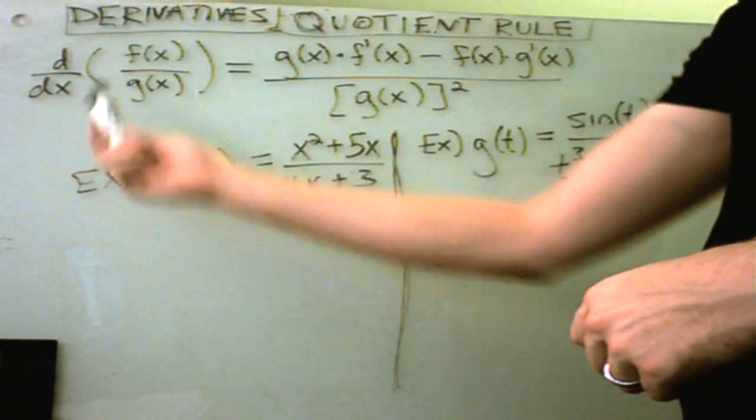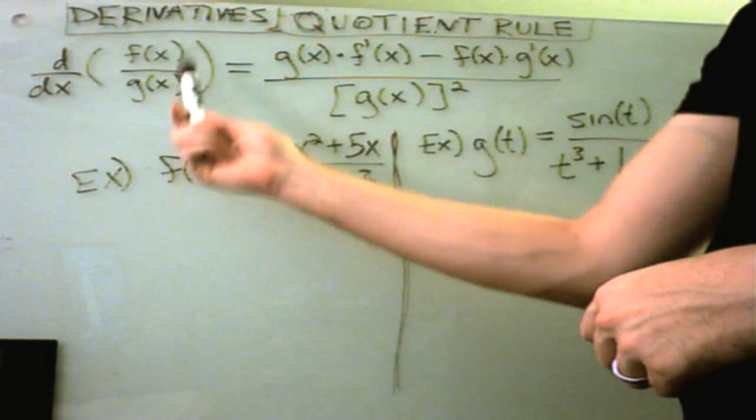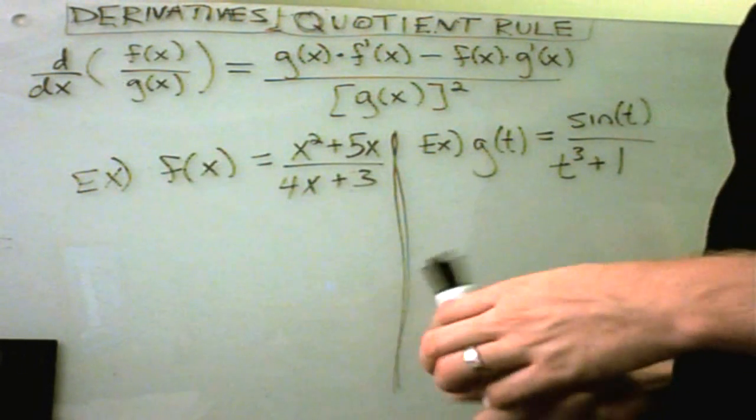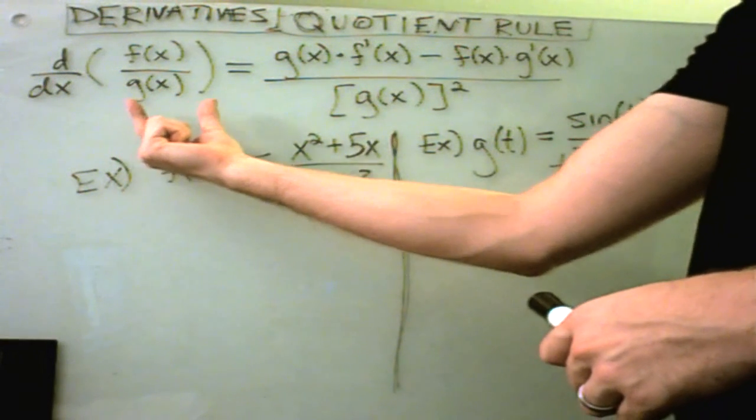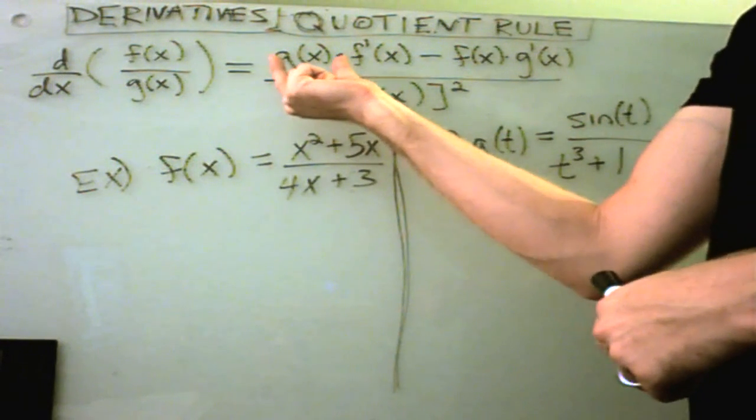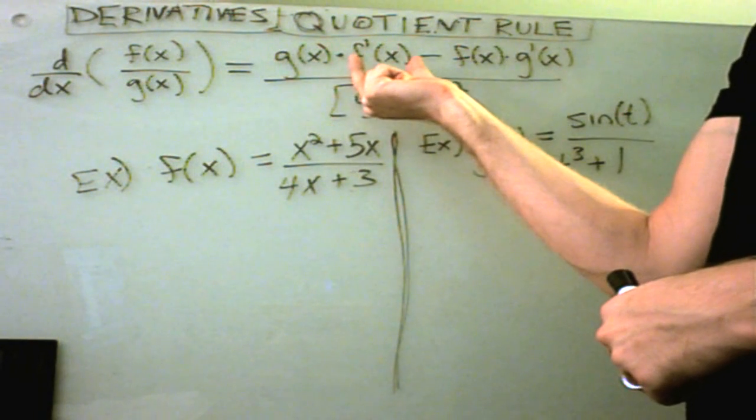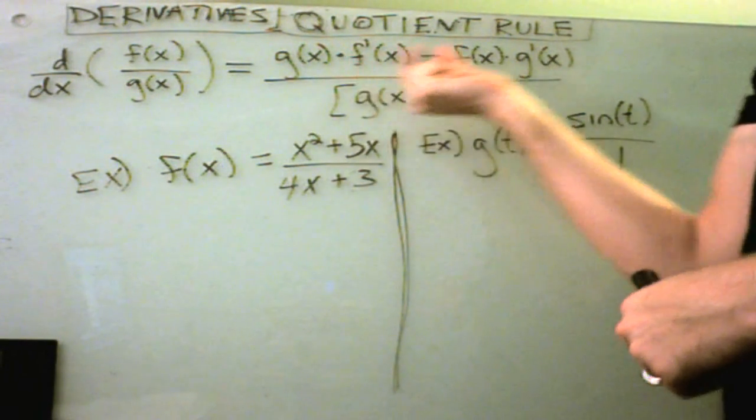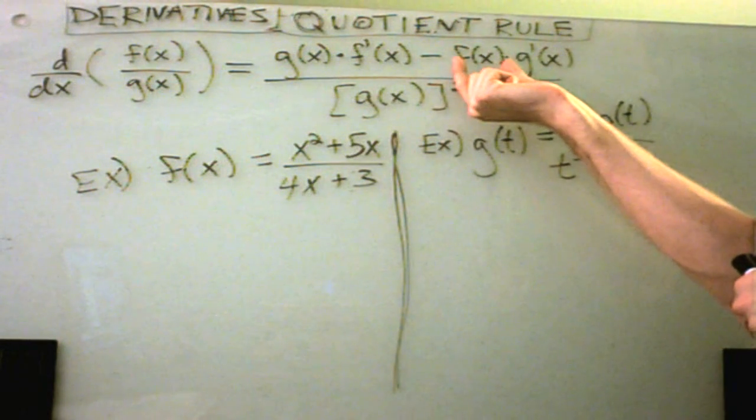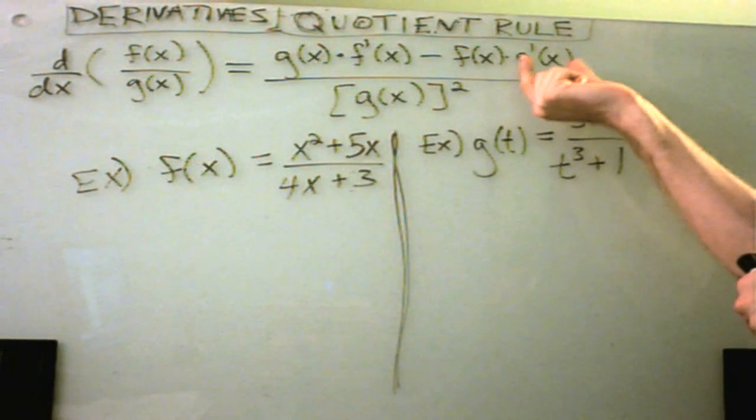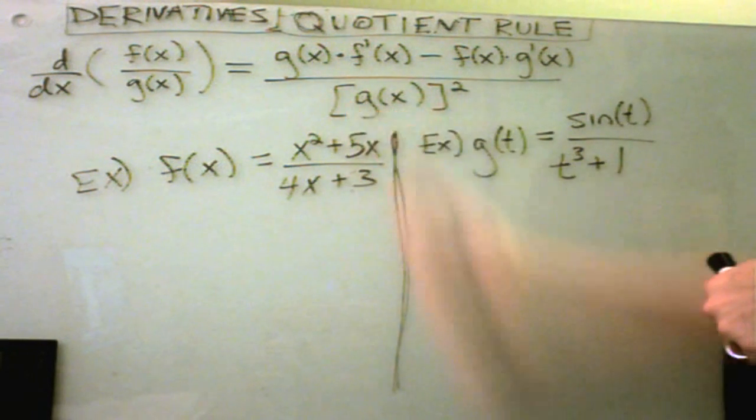It says you're trying to take the derivative and basically it says you have a fraction. You've got something on top, something on the bottom, so you have a quotient. So the quotient rule says you basically take whatever's in the denominator and multiply that by the derivative of what's in the numerator, put a minus sign in between, then you leave the numerator alone and multiply that by the derivative of the denominator. And this all goes over the denominator squared.